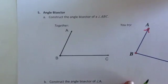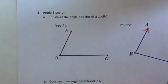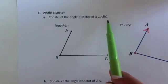Okay, so our next construction, number 5, is asking us to construct the angle bisector of angle ABC.